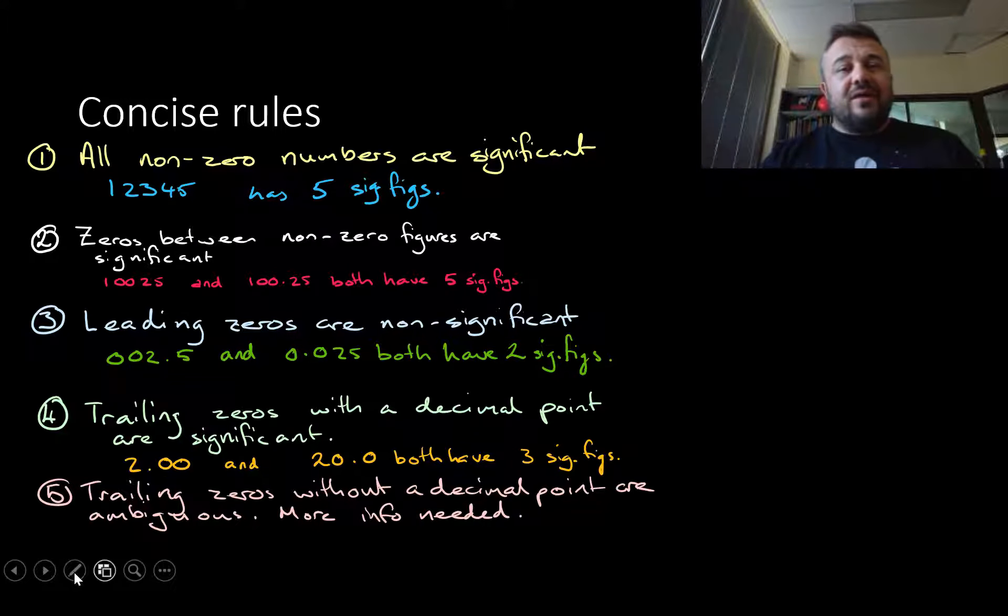Now, yes they're ambiguous but they shouldn't be, and if you move to a higher level beyond say high school they won't be. But we'll talk about that. So 200 could have one, two, or three significant figures and it's tough to know which one it is. Again, we're going to show you how it should be written so the ambiguity is removed.